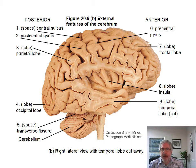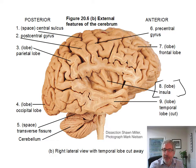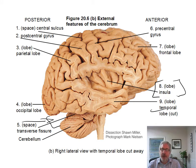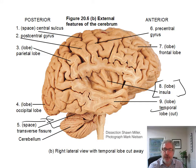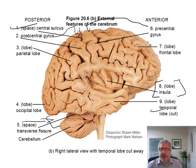Going back over the cerebrum one more time: here's the insula lobe, and the temporal lobe has been cut there. You can see the transverse fissure is down here — that's what this large space is, the transverse fissure. That's different from the lateral fissure, which is the temporal lobe and parietal lobe fissure. And here's your central sulcus, your postcentral gyrus, and your precentral gyrus.